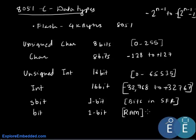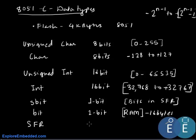The 8051 has 16 bytes of bit-addressable memory in RAM, and when accessing that particular memory we use the bit data type. There is one more data type called SFR, which is 8 bits in size and is used to access the special function registers.